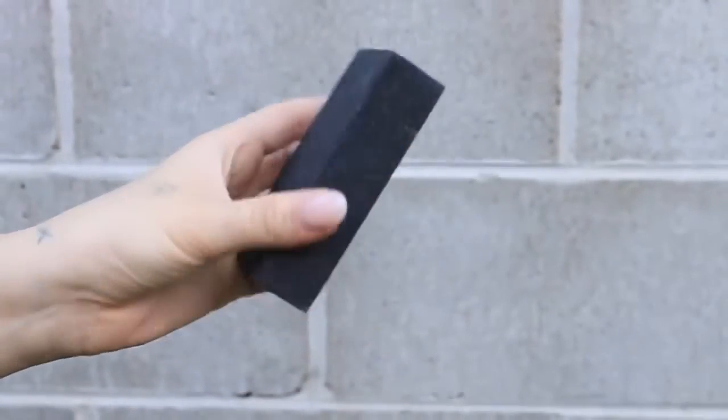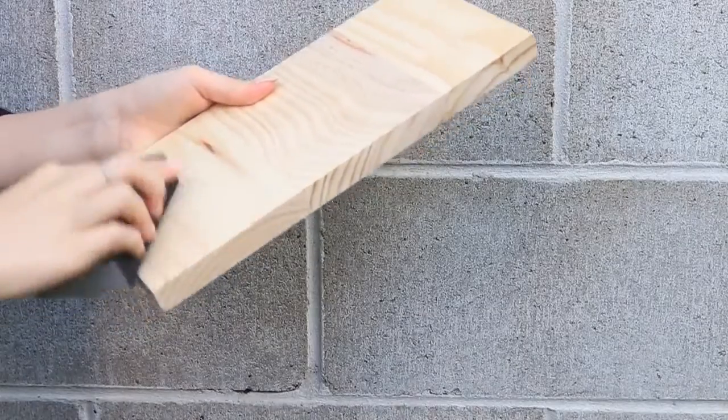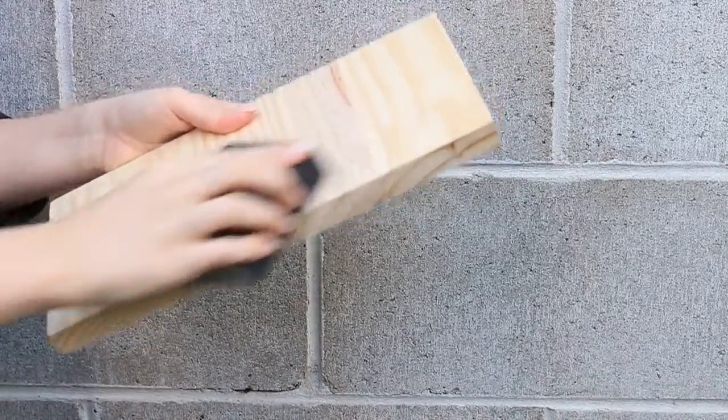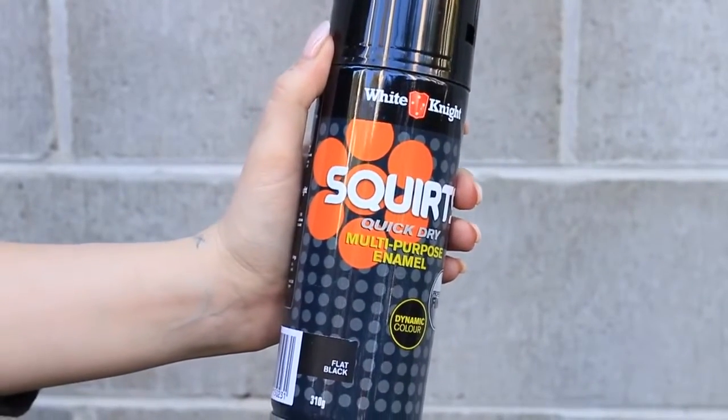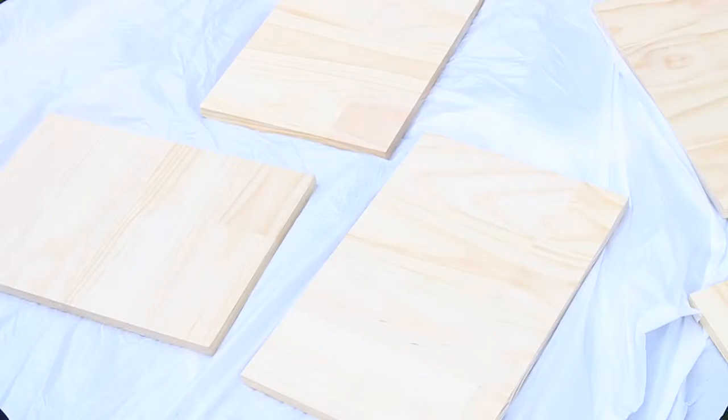Now you're going to take a sanding block of medium grit and you're just going to sand down the wood. I'm going to do a light undercoat on this one, about two coats of paint. So you can see there I've got my black paint and I'm just going to spray the pieces of wood here.